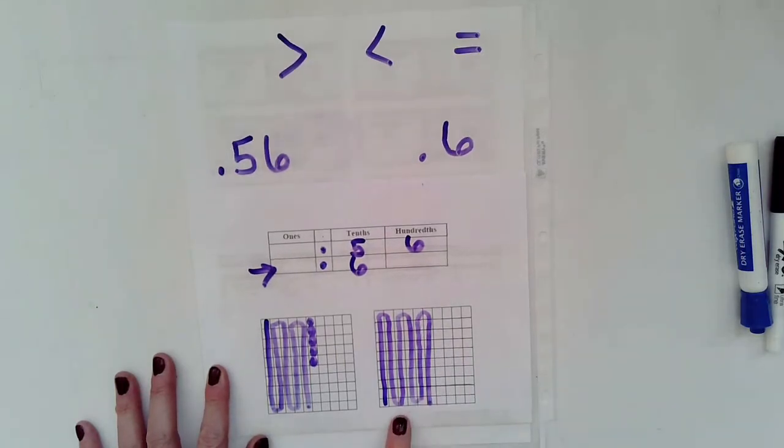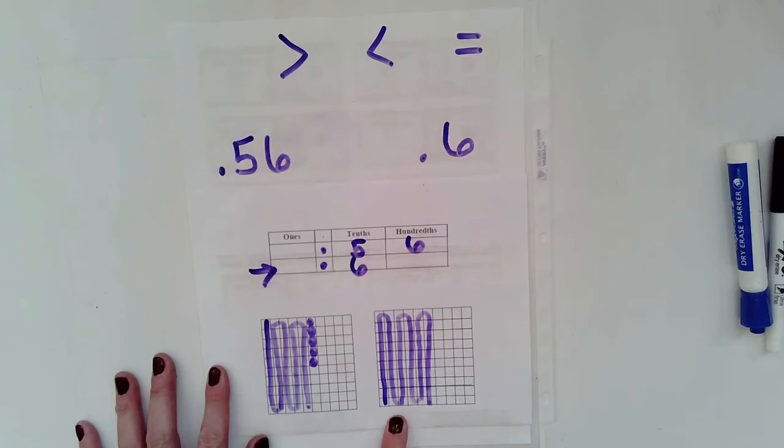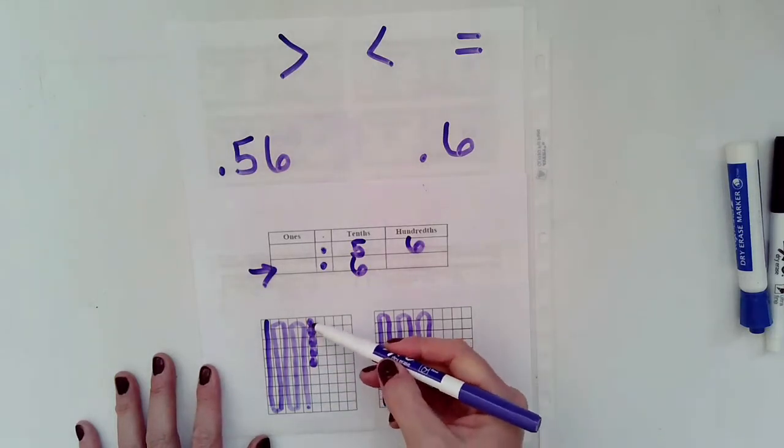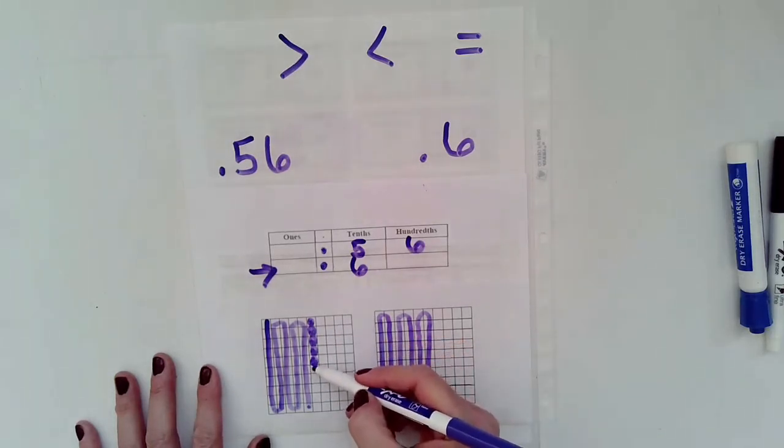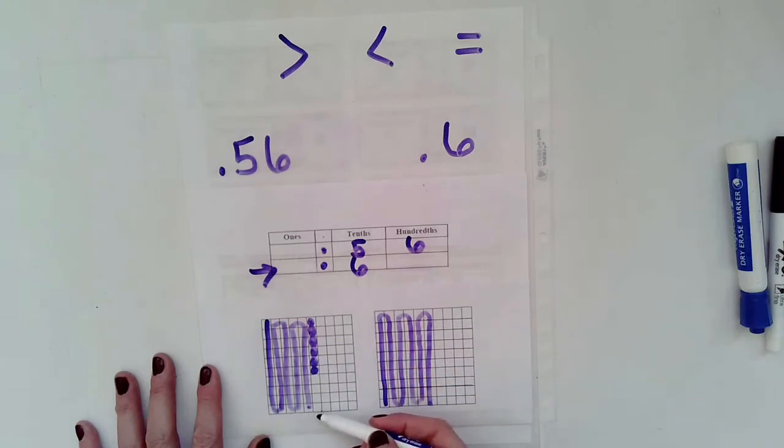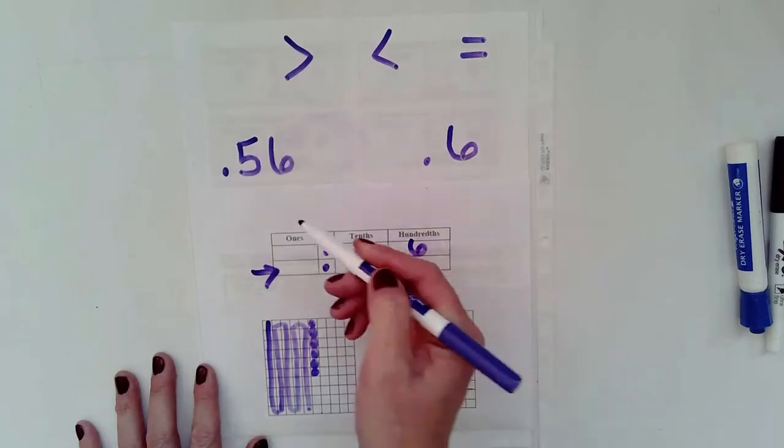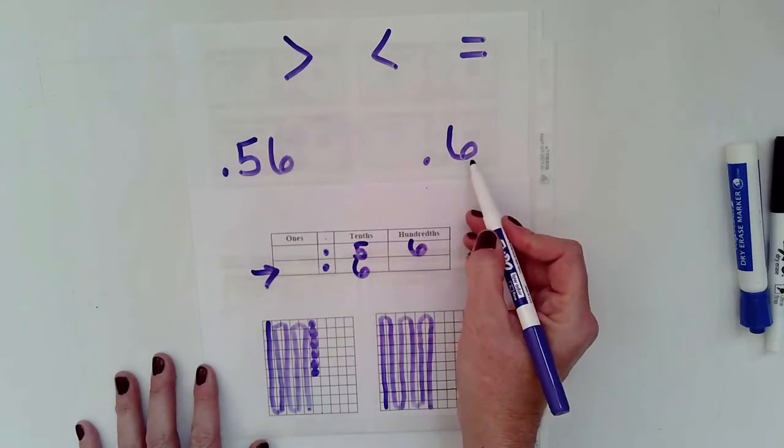So, I know based on my drawing here, that 6 tenths is bigger. And it's not that much bigger. It is 4 hundredths greater, which is a small margin, but 6 tenths is still the larger number.